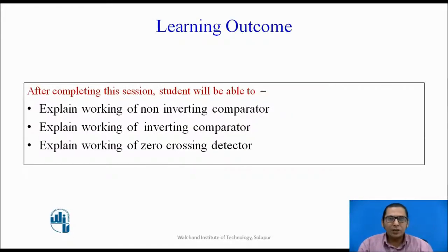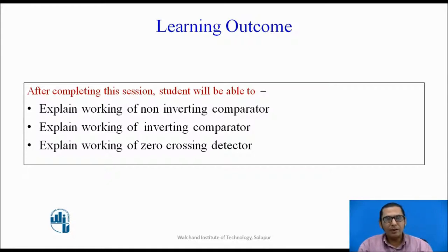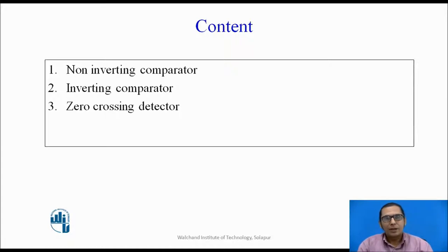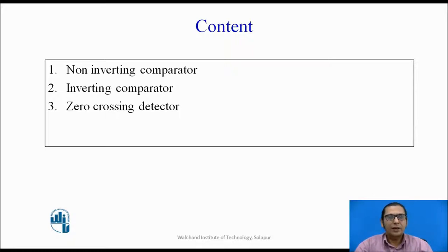The learning outcomes of this session are: after completing this session, the student will be able to explain the working of a non-inverting comparator, an inverting comparator, and a special type of comparator called the zero-crossing detector. In this session, we are going to discuss three types of circuits: first, the non-inverting comparator; second, the inverting comparator; and third, the zero-crossing detector.